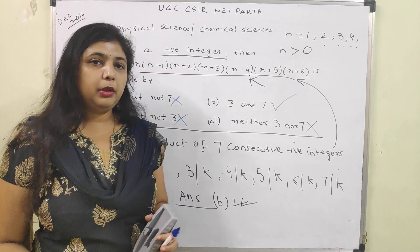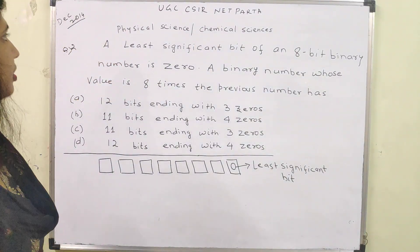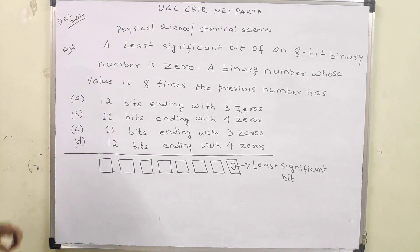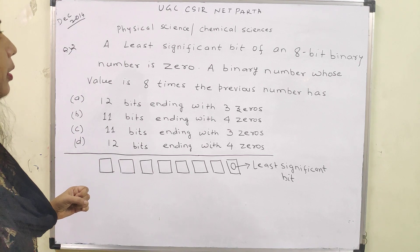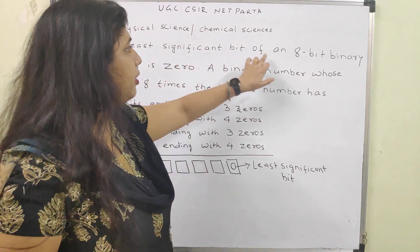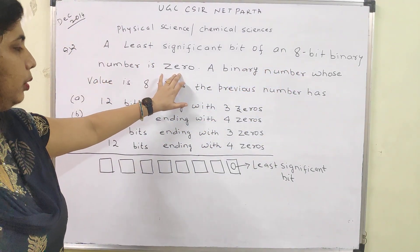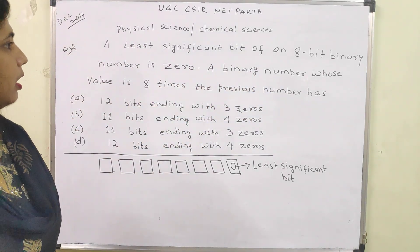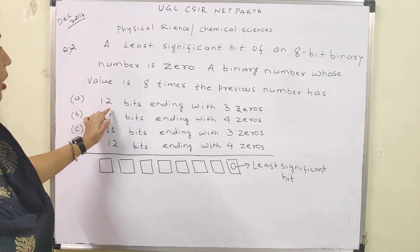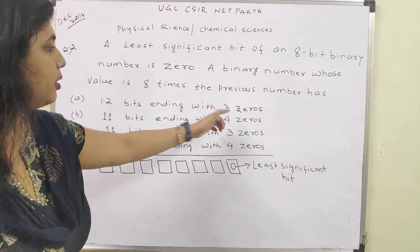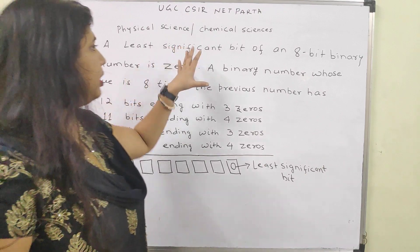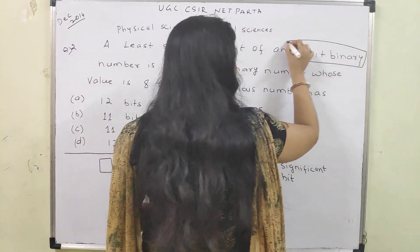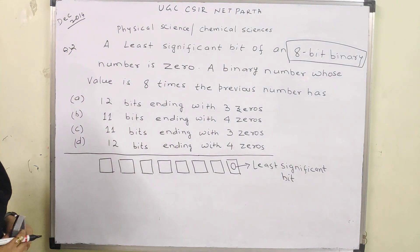We will move ahead for another problem. The next question is again for physical sciences and chemical sciences but useful for all. It is taken from December 2014 examination, NET part A. The question involves an 8-bit binary number.